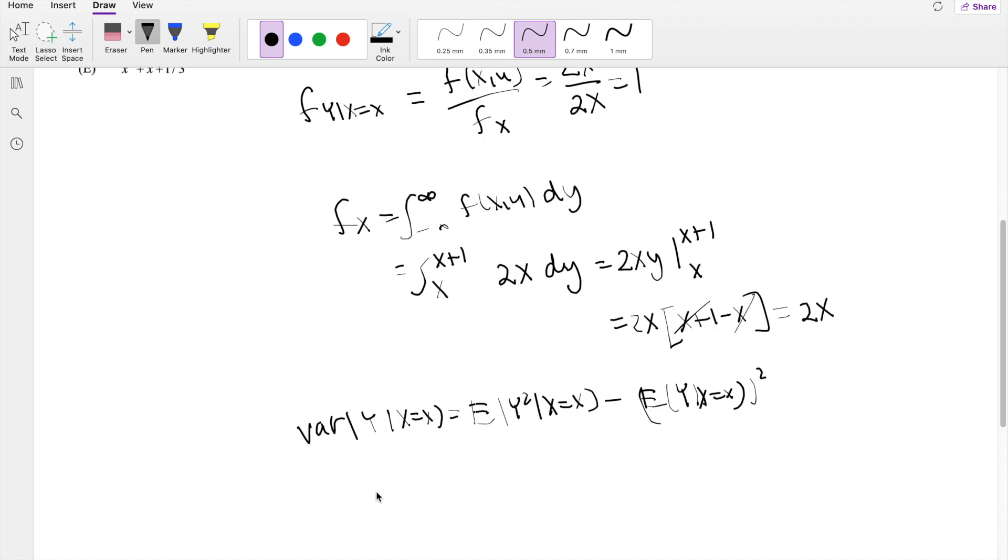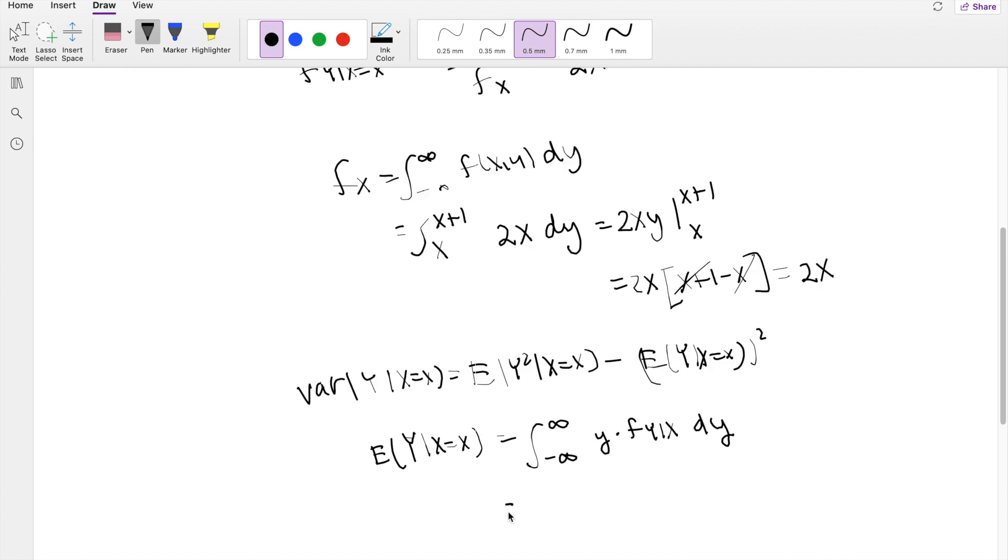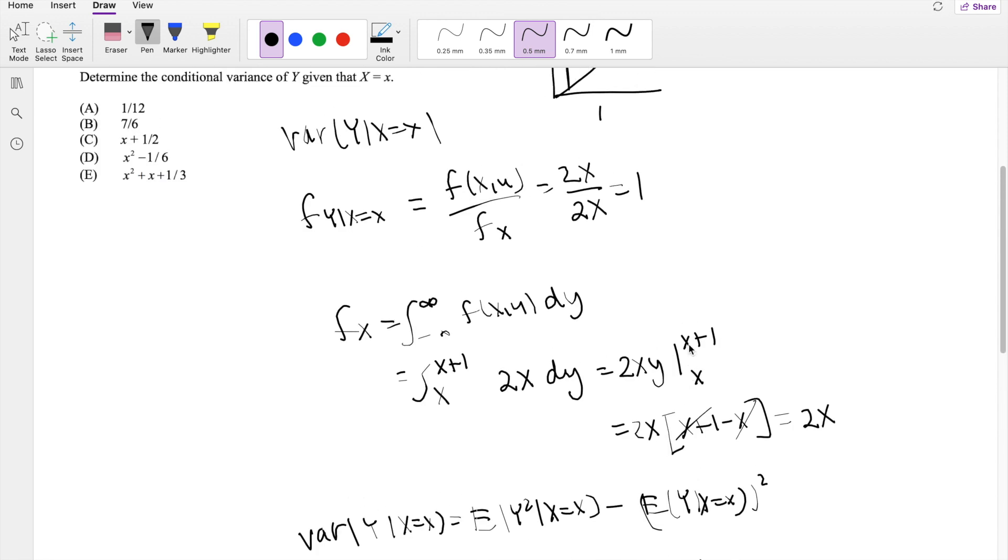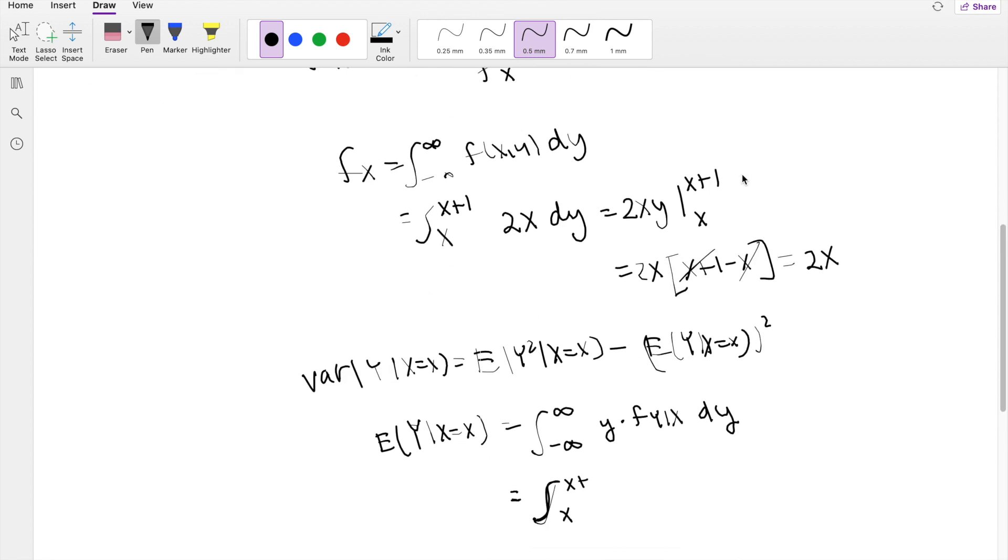So let's start off with the expectation of Y given X equals x. We know that by definition, it's just going from negative infinity to infinity of Y times f(Y | X) dy. So if we're integrating with respect to dy, the range is still the same. So its lower limit is going to be X, upper limit X plus 1. Conditional probability here is just 1, so then we're just integrating Y dy,